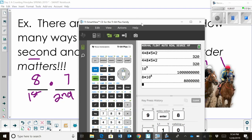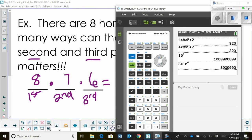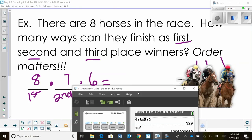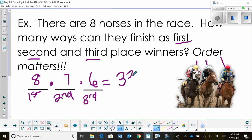So let's get our calculator out. And let's multiply eight times seven times six. And that gives us 336 possible ways those horses can finish first, second and third.